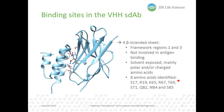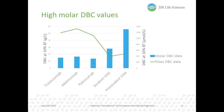Now we have a better understanding of this binding between our protein A ligand and VHH single domain antibodies on a molecular level, and we want to see how we can interpret this binding performance in a downstream processing context. When we compare the dynamic binding capacity expressed in grams of product bound per liter resin for VHH single domain antibodies to full-size mAbs, we can see that these values are about two to three times lower for VHHs than for monoclonal antibodies.